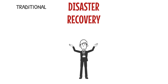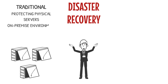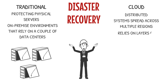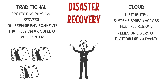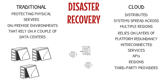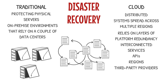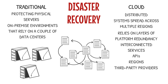Let's start with what makes cloud disaster recovery so unique. Traditional disaster recovery is about protecting physical servers and on-premise environments that rely on one or two specific data centers. But the cloud is different — it's distributed. Your systems are spread across multiple regions, relying on layers of redundancy built into platforms like AWS, Azure, or Google Cloud. Sounds great, right? But with the cloud, you're not just managing your own environment — you're managing a web of interconnected services, APIs, regions, and third-party providers. It's a complex ecosystem, and if you don't account for every dependency, you're at risk.